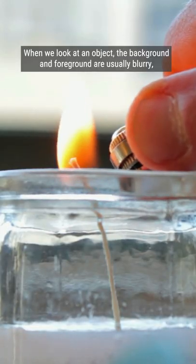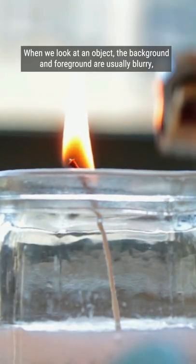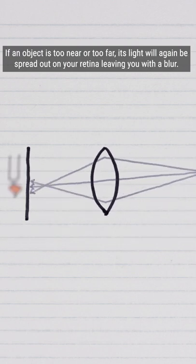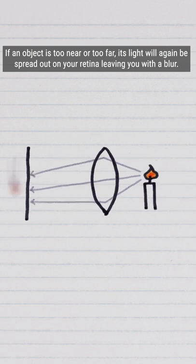when we look at an object, the background and foreground are usually blurry, because a lens can only focus light coming from one distance away. If an object is too near or too far, its light will again be spread out on your retina, leaving you with a blur.